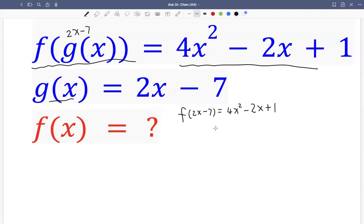So one way of doing this is to rewrite this function in terms of 2x minus 7. So we're treating 2x minus 7 as a variable. So how do we do that?